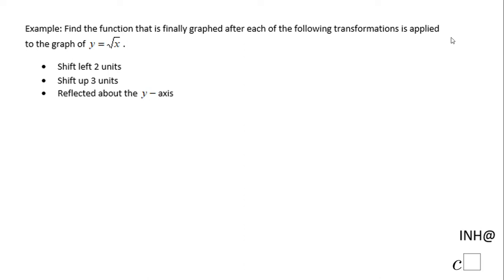Welcome back to I Need Help at C Square. In this example we need to find the function that is finally graphed after the following transformations are applied to the graph of y equals square root of x: shift left two units, shift up three units, and reflected about the y-axis.